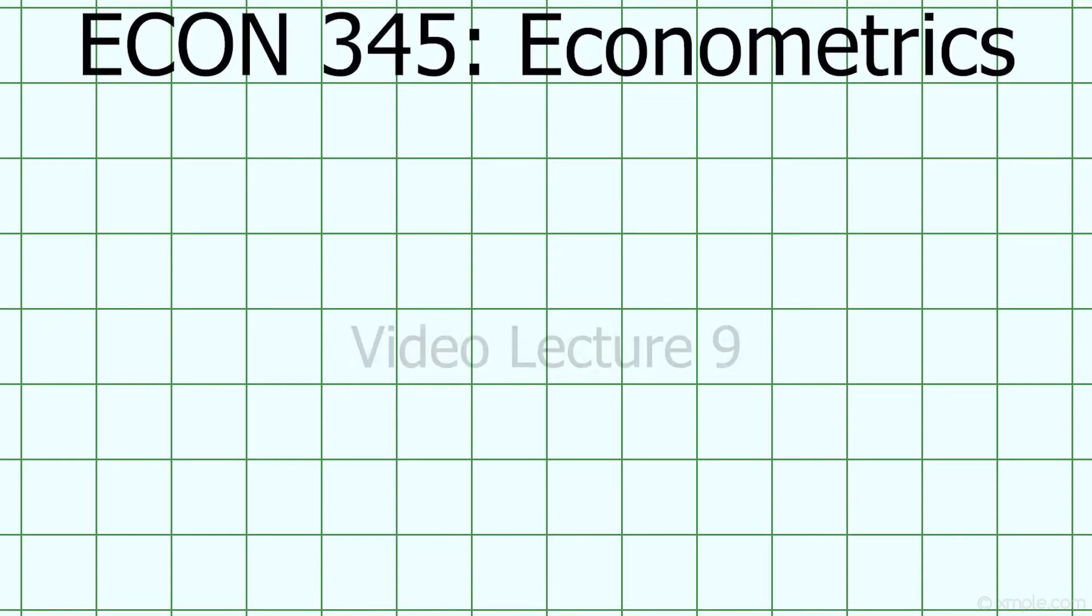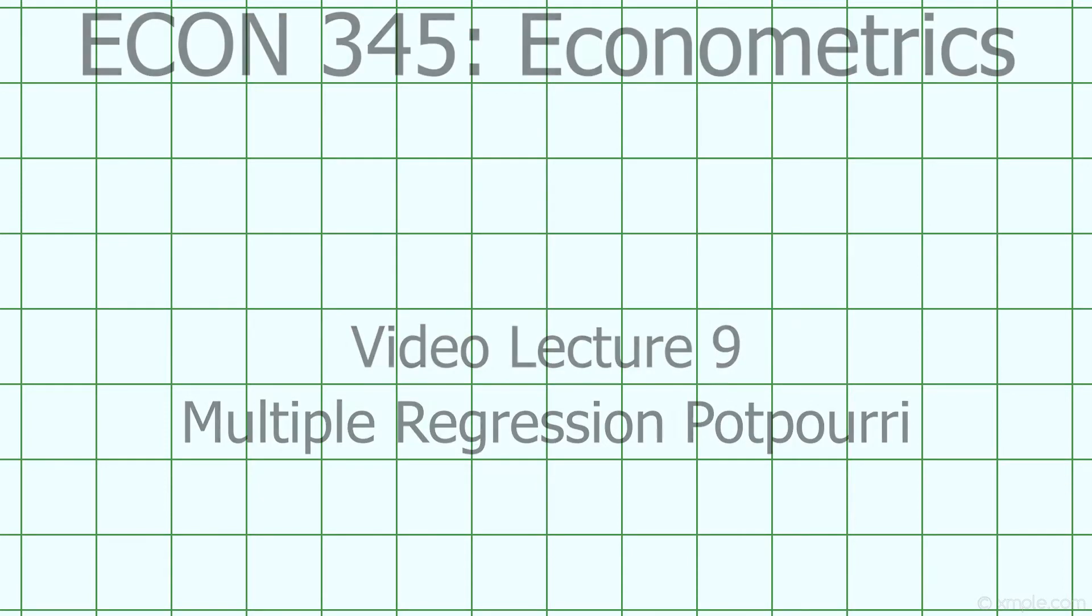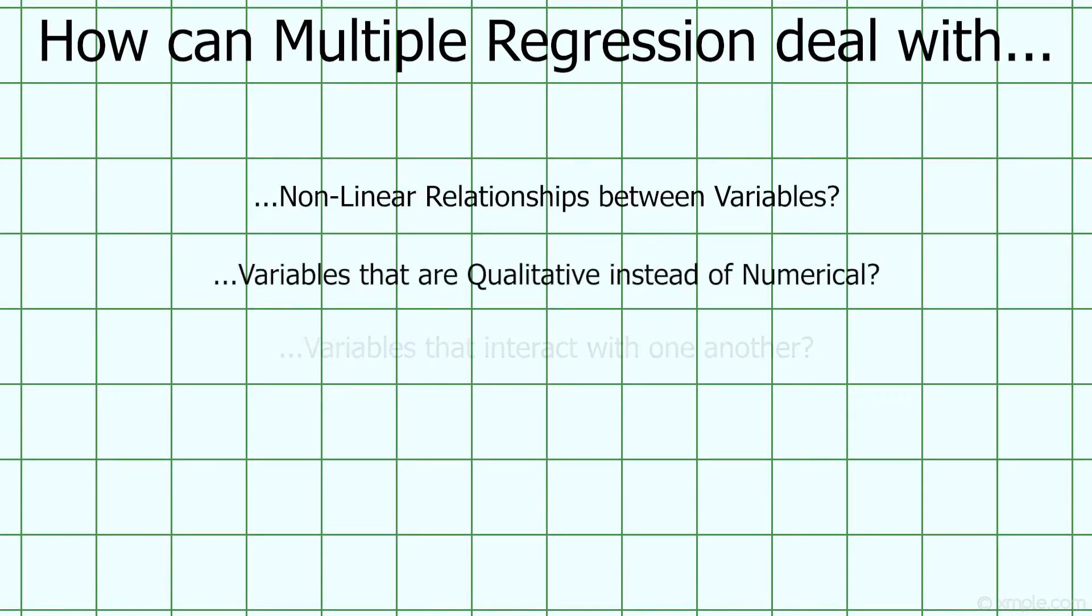Before the midterm, we discussed multiple regression, which allowed us to make ceteris paribus comparisons and control for the effects of formerly omitted variables. This week, we'll cover some techniques that allow us to modify and expand multiple regression to account for relationships between variables that don't fit neatly into the simple linear structure imposed by it.